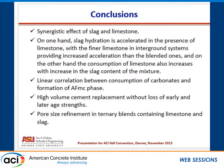Coming on to the conclusions: we were able to identify a synergistic effect of slag and limestone. The consumption of limestone was increased because of the presence of slag and particularly the reactive aluminates in slag, while the reactivity of slag was also increased in the presence of limestone. We found a linear correlation between the consumption of carbonates and the formation of the monocarbo-aluminate phase. With respect to compressive strengths, at later ages the strengths were invariant of the clinker factor, so comparable strengths can be achieved with less cement content. With respect to porosities, there was a pore size refinement in the ternary blends containing limestone and slag.